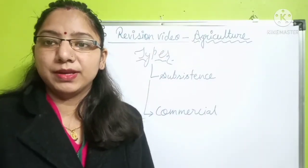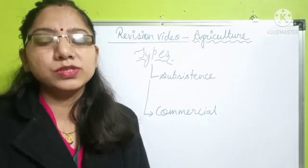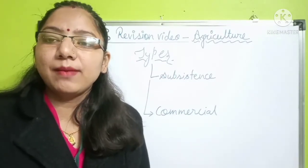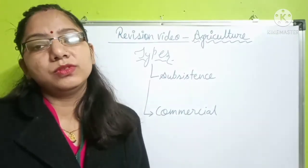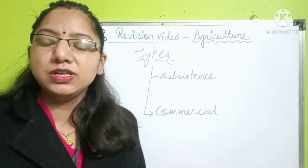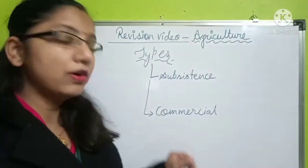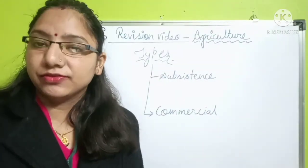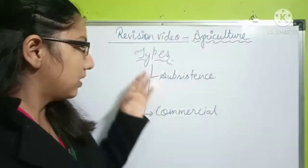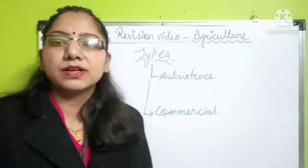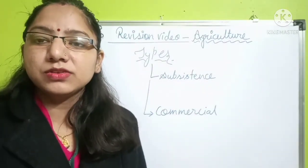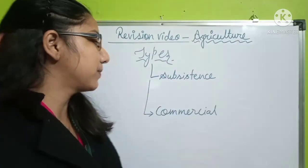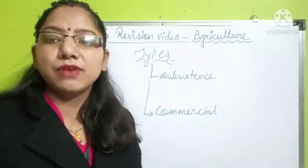Commercial farming is mostly used in many countries. Commercial farming includes mixed farming and is especially beneficial for the economic development of the farmer as well as the country. Let's now see the meanings of the subtypes of both subsistence farming and commercial farming.